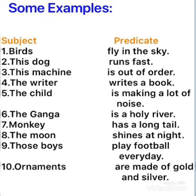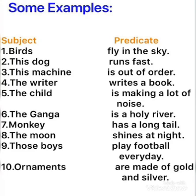Second — subject singular or plural ho sakte hain. Jaise abhi subject wali row dekho — birds plural hai, dog singular hai, machine is also singular. Writer, child, Ganga, monkey, moon — yeh sab singular hain. Uske baad fir boys aur ornaments — plural. Okay? Noun ho sakte hain, pronoun ho sakte hain.